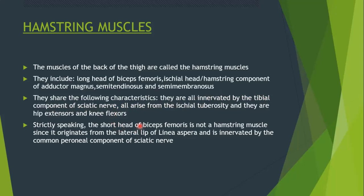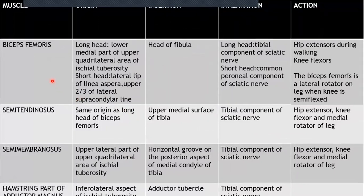You might be asked in an exam why the short head of biceps femoris is not a hamstring muscle — those are the answers. Now let's look at each muscle: they all have common actions which are hip extension and knee flexion, but biceps femoris and semitendinosus each have an additional action.